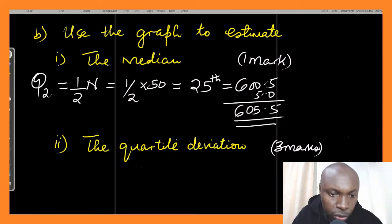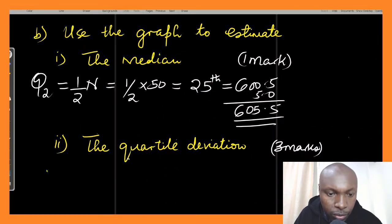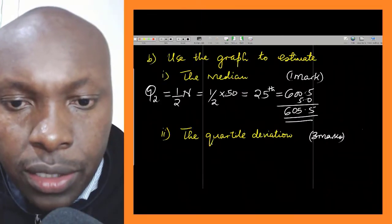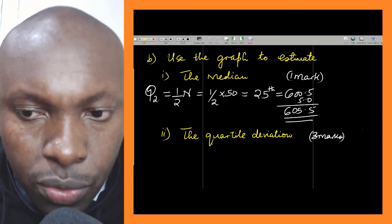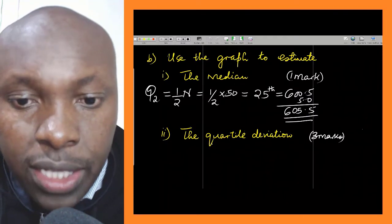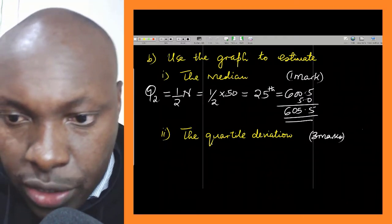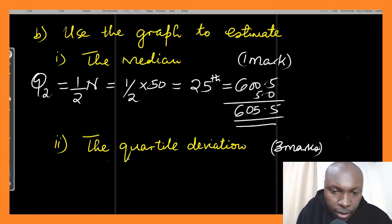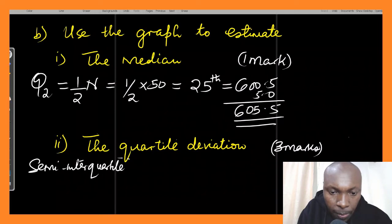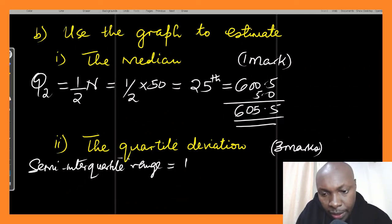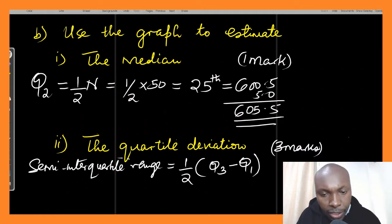The next question is on quartile deviation. Quartile deviation is obtained by taking Q3 minus Q1 divided by 2. The other name for quartile deviation is semi-interquartile range, which is half of (Q3 minus Q1).